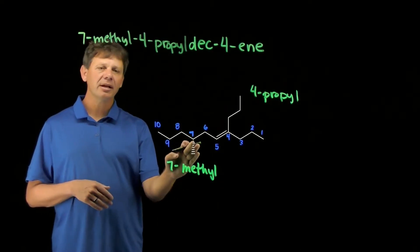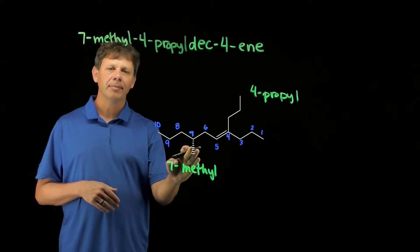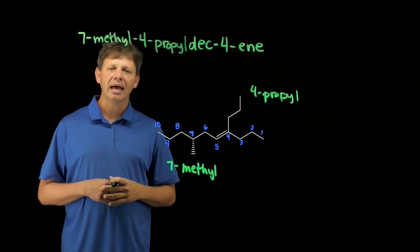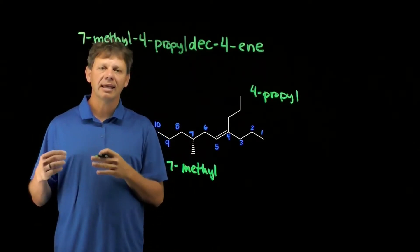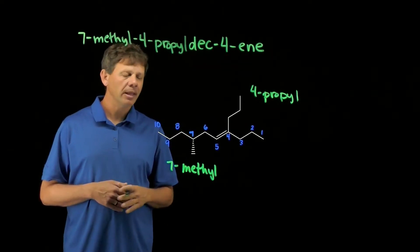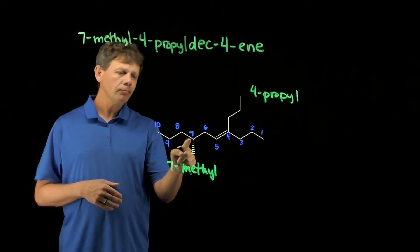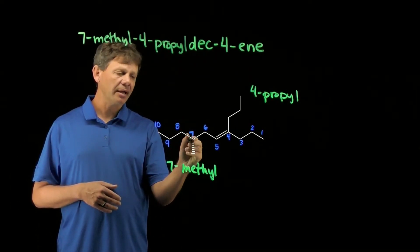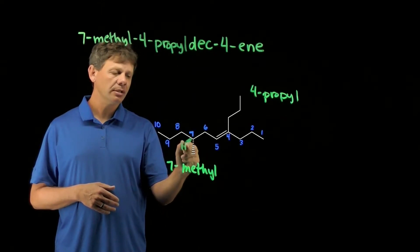Not quite. We have a stereo center at C7 and so we need to name this as R or S to indicate the absolute configuration. The way we'll do that, we'll first recognize that that carbon also has a hydrogen coming forward.